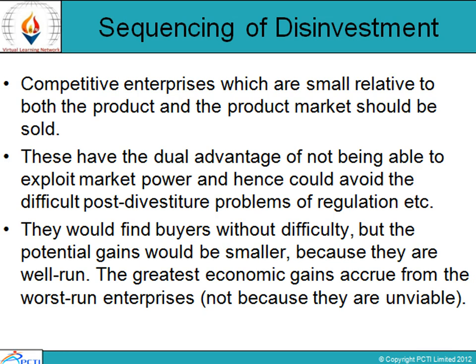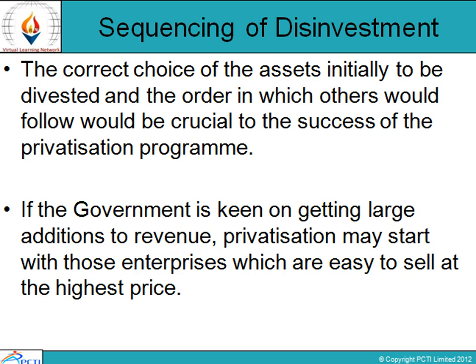Furthermore, large gains are possible in industries where damage is caused basically by constraints on autonomy, and where quick decisions are required, such as for marketing consumer goods. The sale of well-run enterprises is helpful in establishing credibility for the program and declaring serious intentions of the government. Ultimately, it is not so much what is disinvested but how it is disinvested that makes a difference. The correct choice of assets to be initially divested and the order in which they are divested is very crucial for the success of the privatization program.